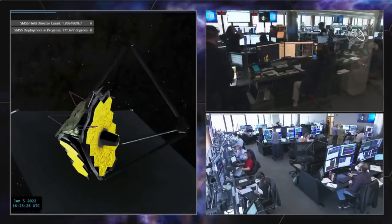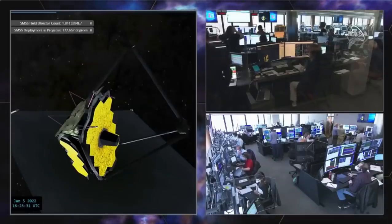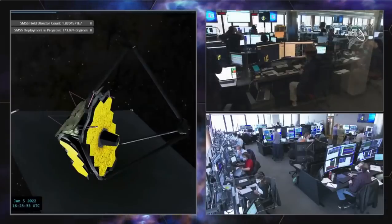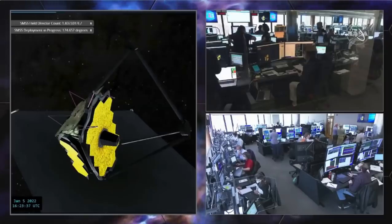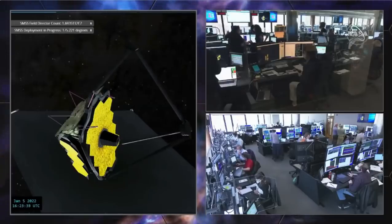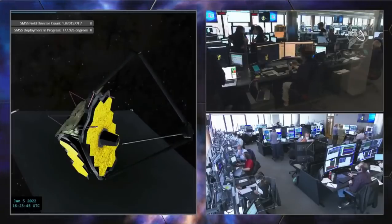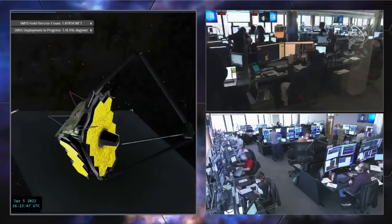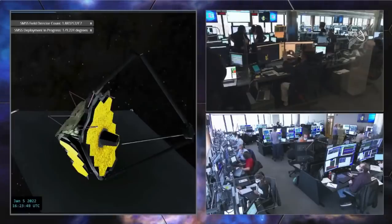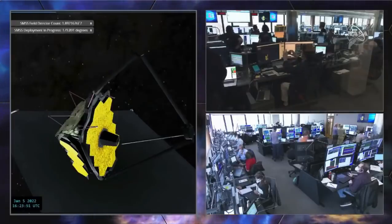So this is the first time doing it in zero gravity. We were talking about that yesterday with the non-explosive actuators—all of these little pins that need to release to unfold different parts of the telescope. Those were all tested on earth where you were not in zero gravity, but they needed to work in space.